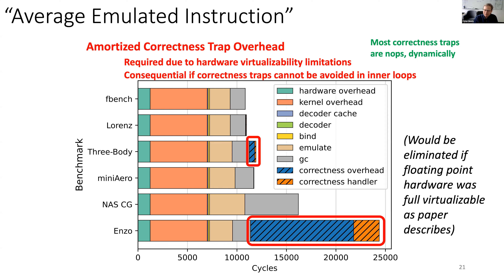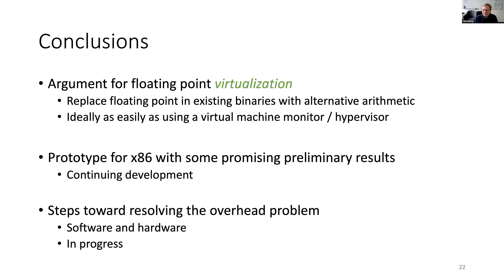For folks from industry — particularly Intel, AMD, etc. — if we could fully virtualize the floating point hardware, these costs would be eliminated. In conclusion, we make an argument for why you would want floating point virtualization, define it, and show a prototype with some promising initial results. Obviously 1000x slowdown is not the final result; we want to get it to something like 1.1x, similar to classic virtualization, and we've described steps toward resolving the overhead problem.